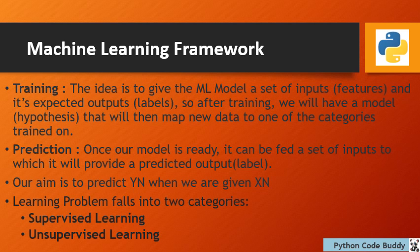So in our earlier example of x1,y1; x2,y2; x3,y3 — our aim is to predict yN when we are given the xN set of data. This learning problem falls into two categories: supervised learning and unsupervised learning.